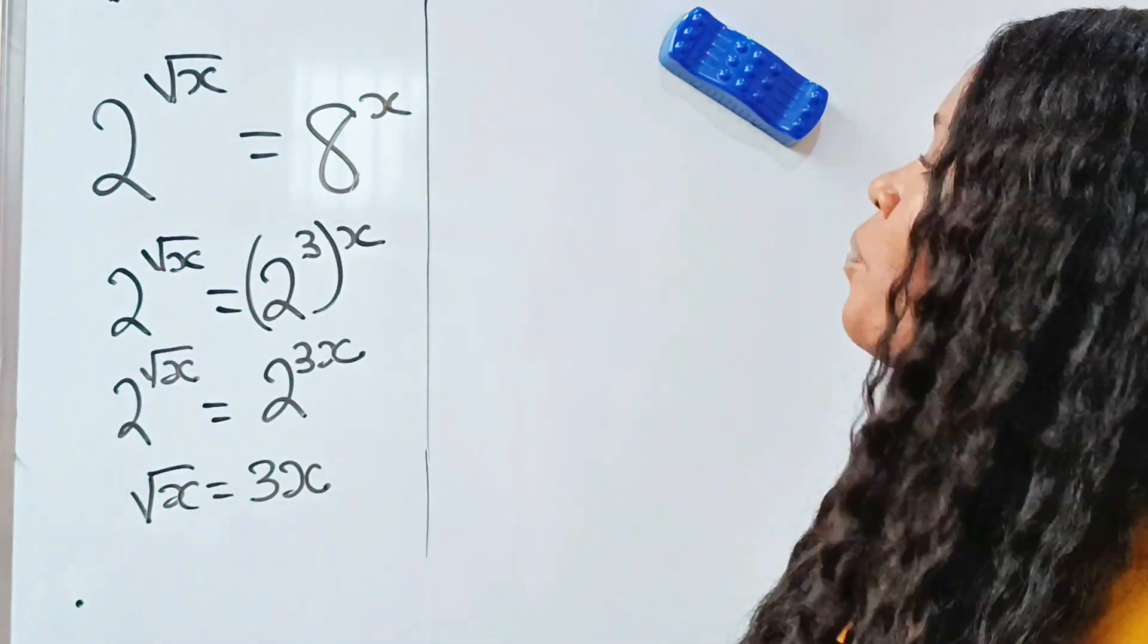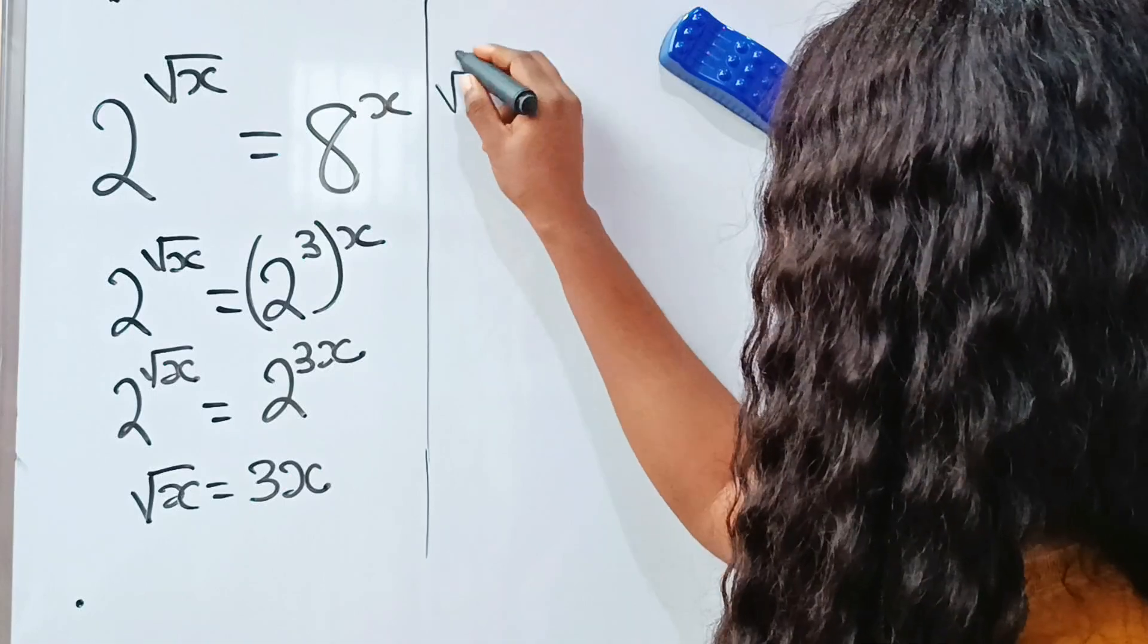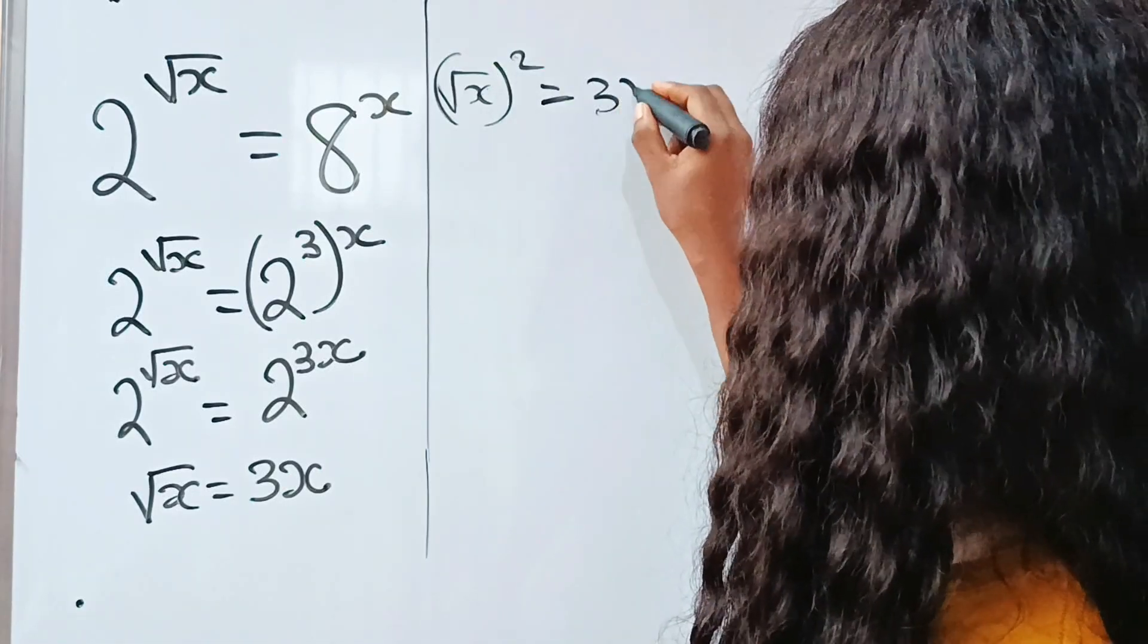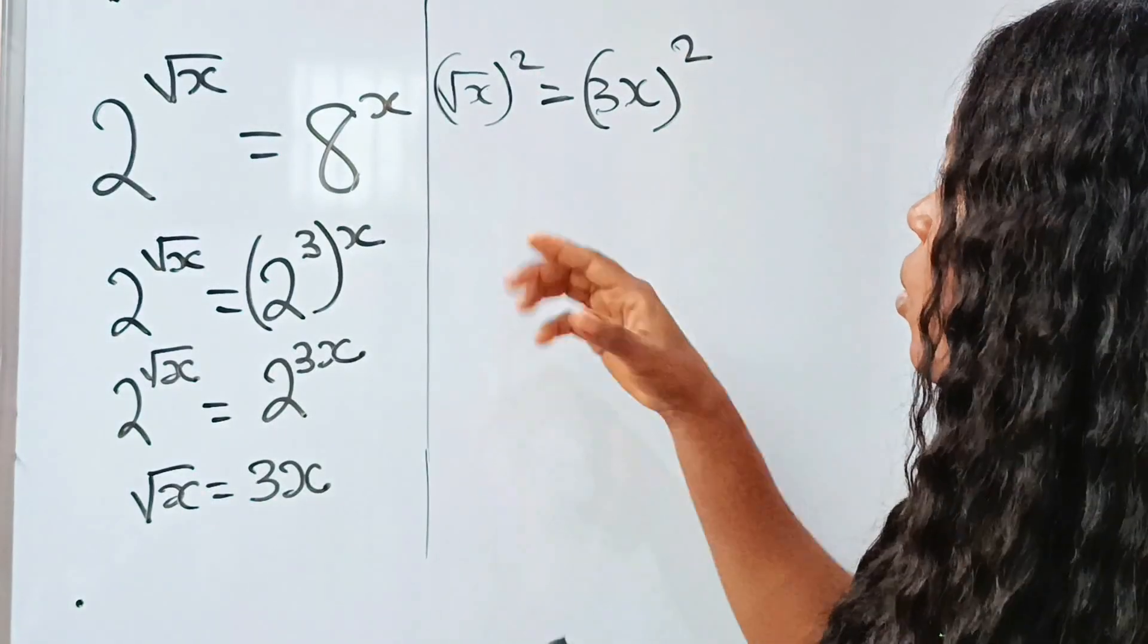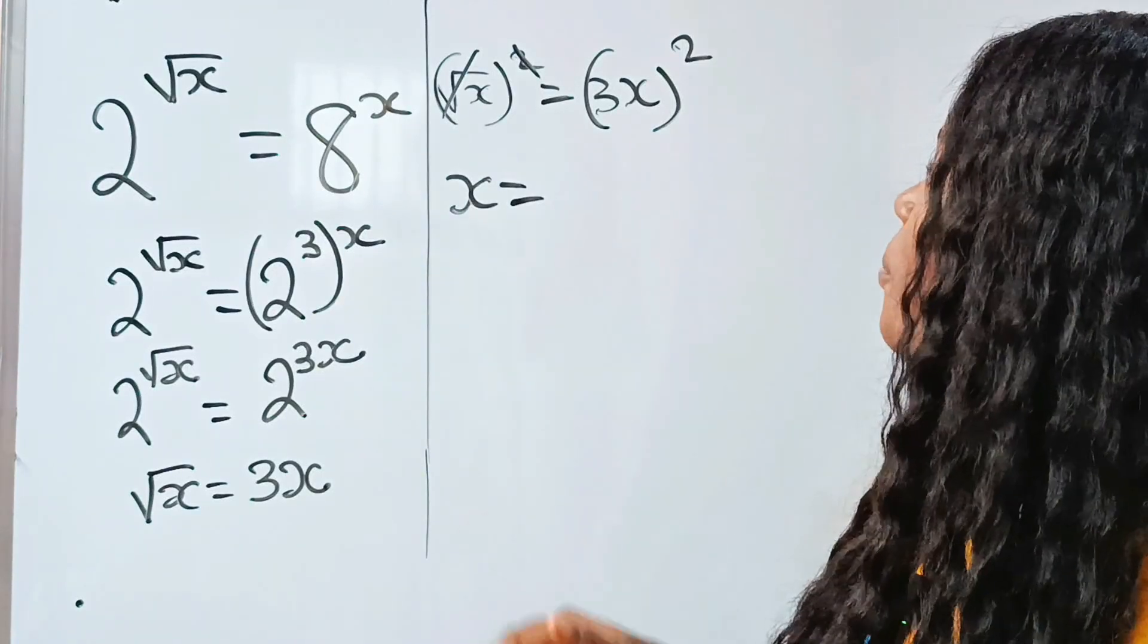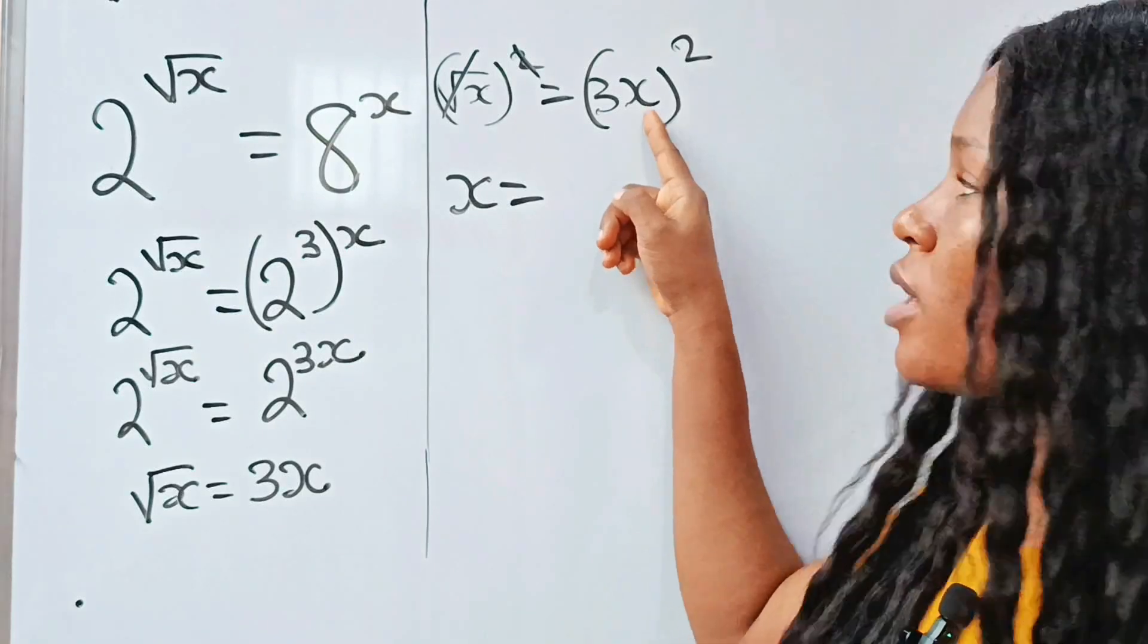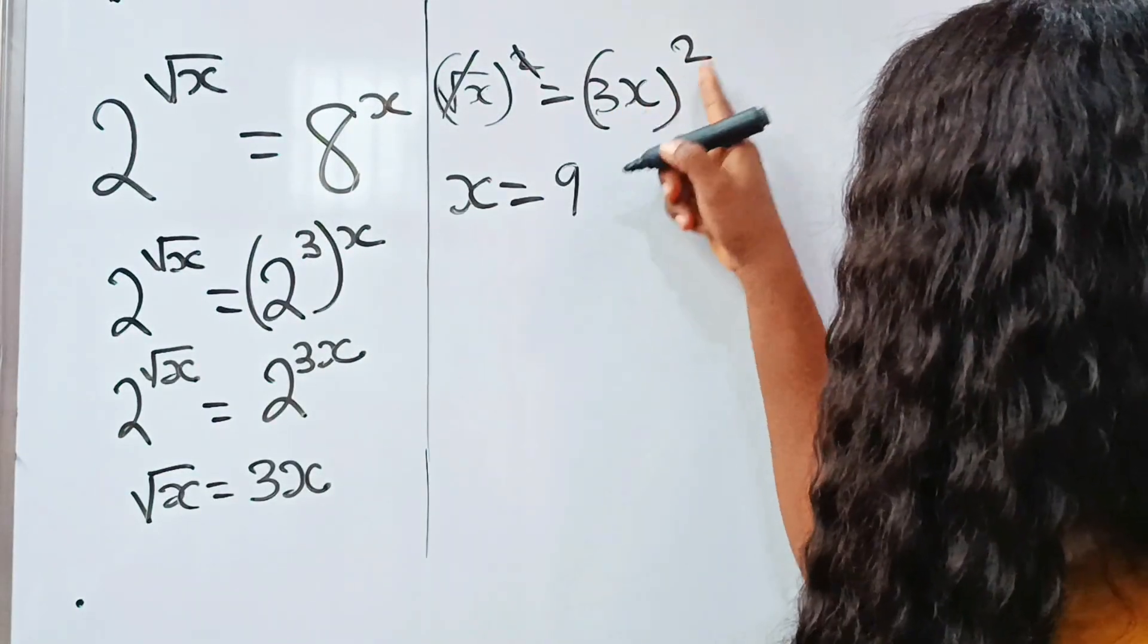So we are going to have square root of x squared is equal to 3x squared. Now this square is going to cancel this square root, so we have x is equal to... this square is for both 3 and x, so it's going to be 3 to the power of 2, which is 9, times x squared.